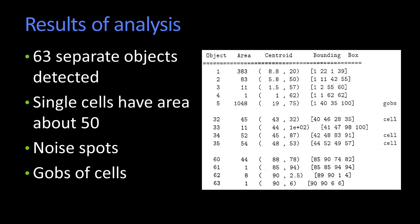Because in this particular image, there were 63 separate objects detected. And a normal blood cell has an area of about 50. But you'll notice there are some things here where obviously there were things that were touching each other that were counted as single cells when actually they were gobs.